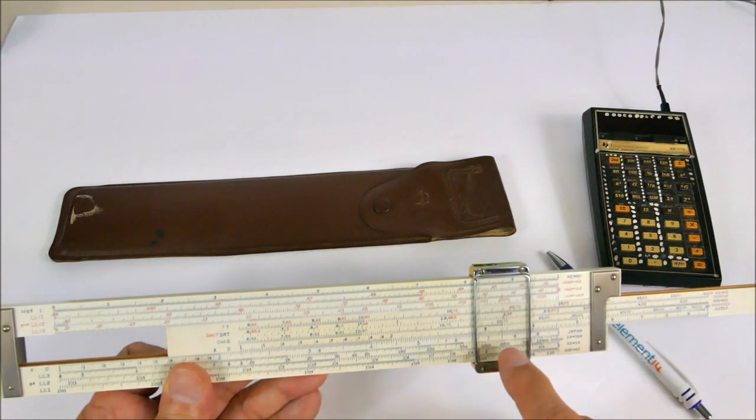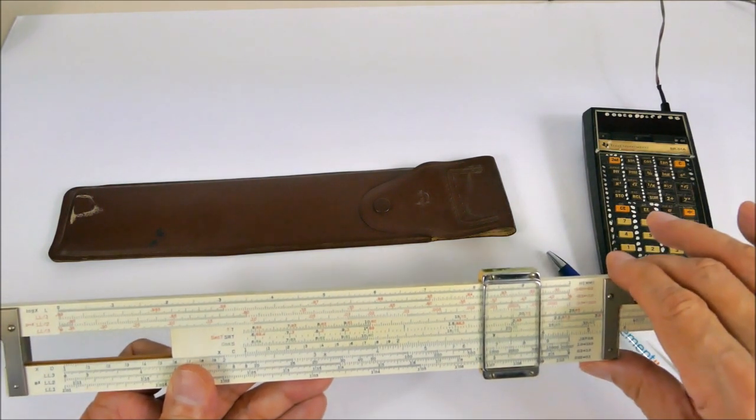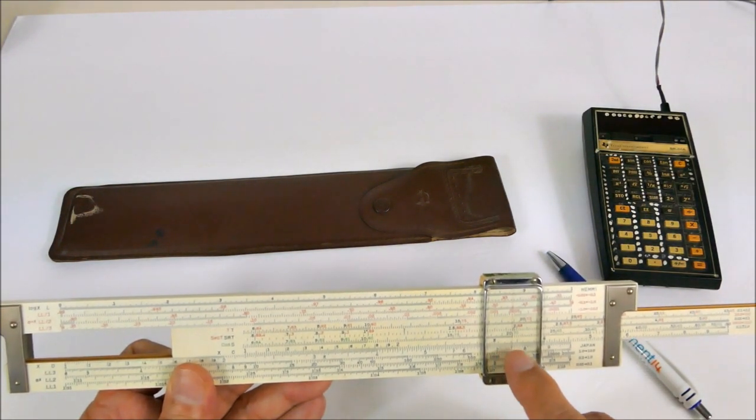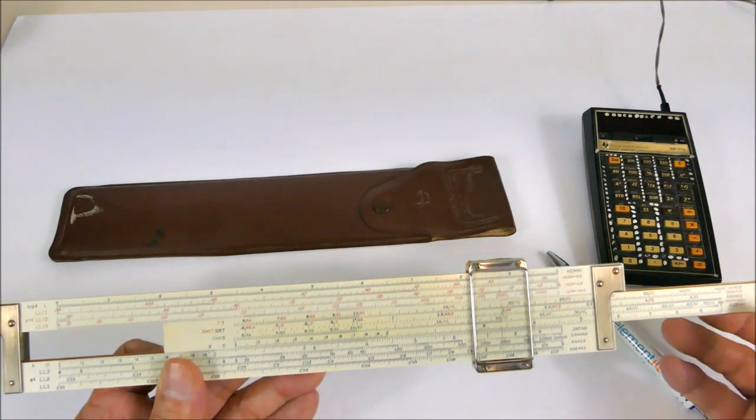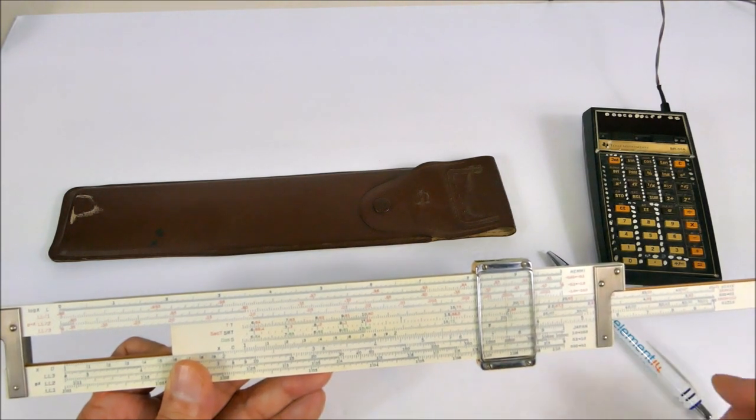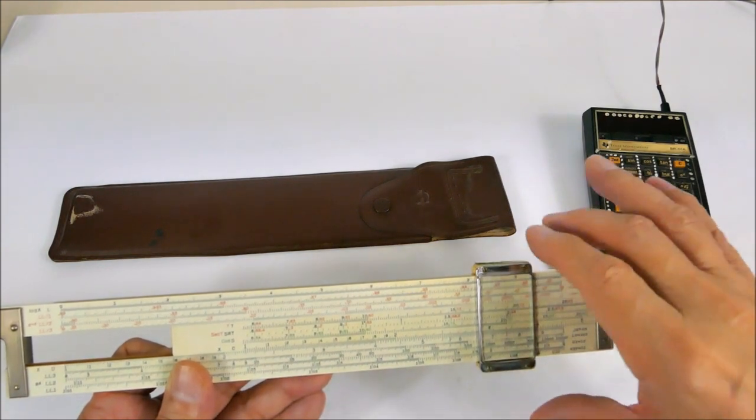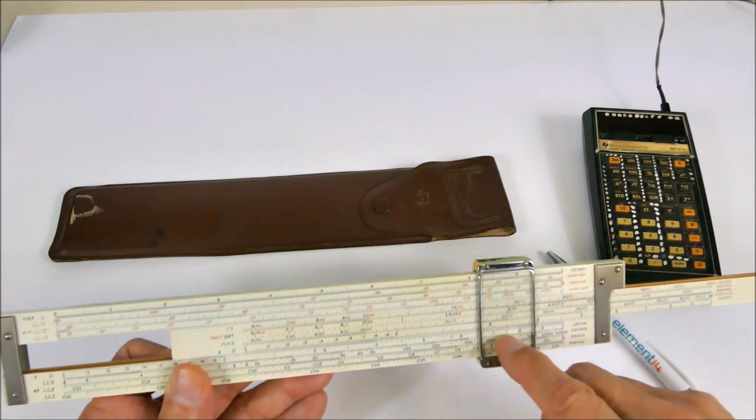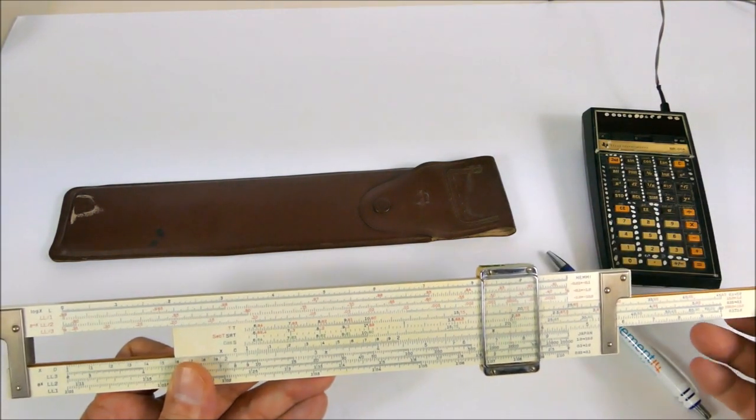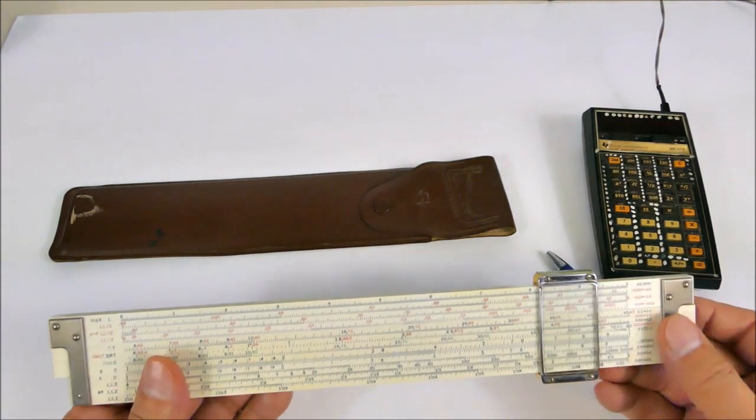But we didn't need to read off that the cosine of 70 is, which is on this scale here, point three four two-ish. But the slide rule can do this multiplication without actually looking at the intermediate value. So you can read the answer simply by putting the cursor on 70 degrees and you get the result. You don't need to know what the actual cosine is. So that's pretty slick. You can actually use the slide rule as an accumulator as you're doing sequential calculations.